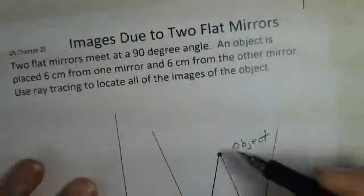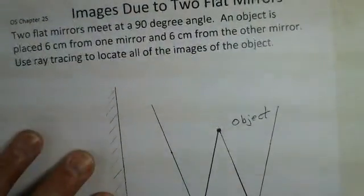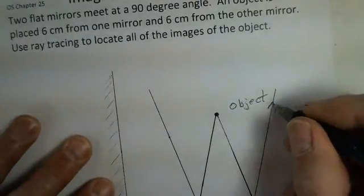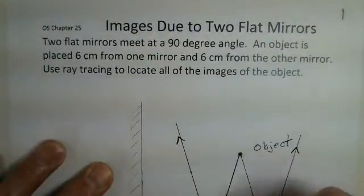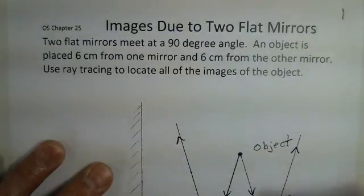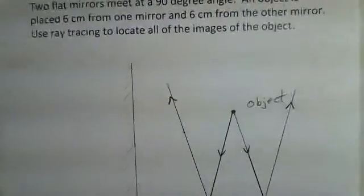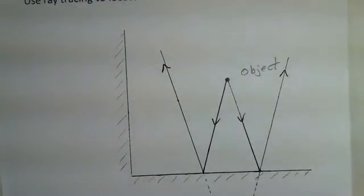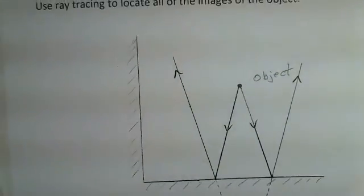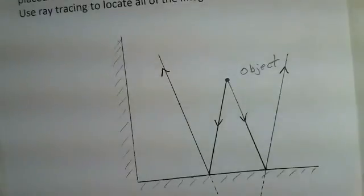And our eye out here, looking at the rays, would trace back. The light is actually leaving the mirror after bouncing off, but our eyes will trace back this diverging light to behind the mirror object, locate image number one.